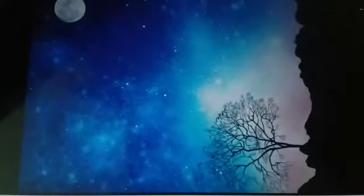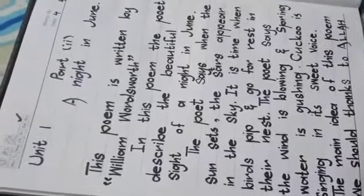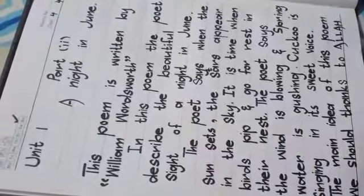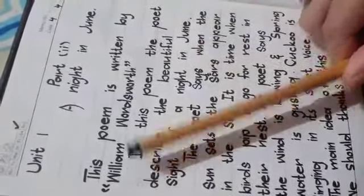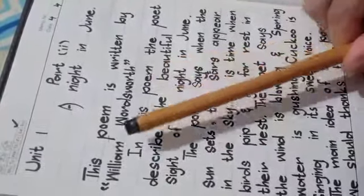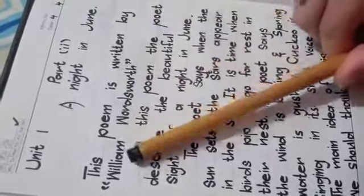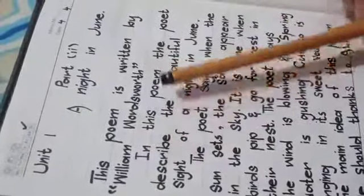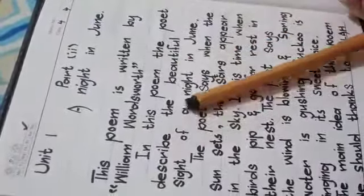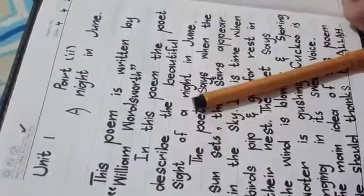You will learn this at your home. Okay students, I have summarized it again. This poem is written by William Wordsworth. In this poem, the poet describes the beautiful sight of a night in June.